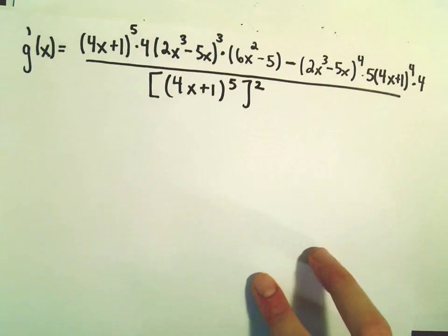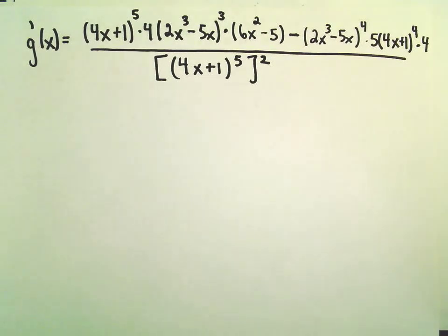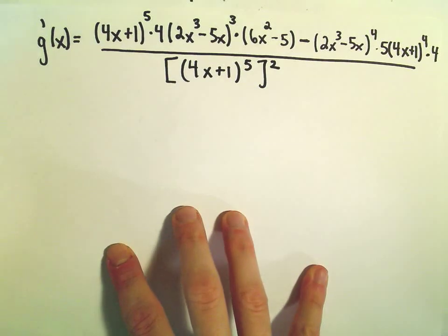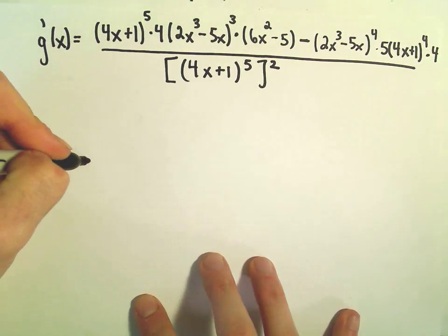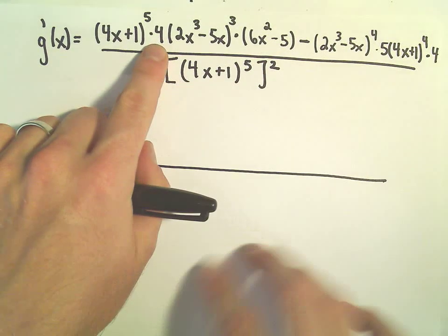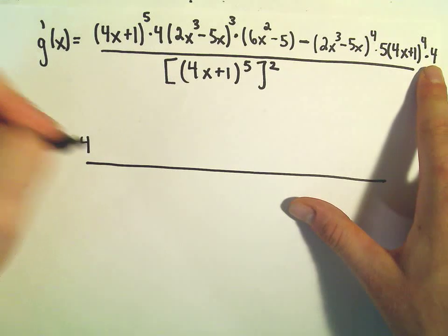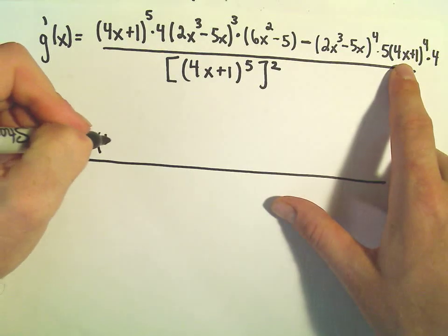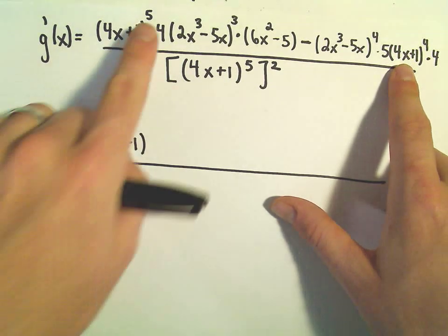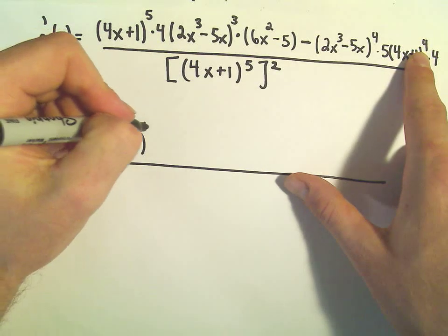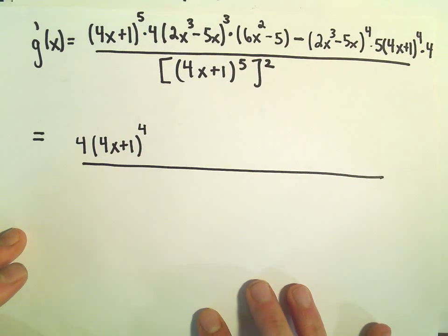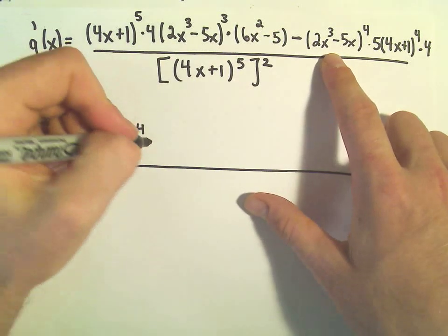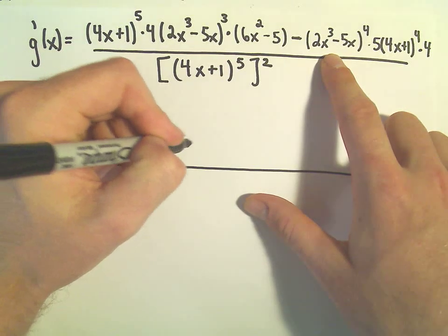So let's see if we can't try to condense this down a little bit better. Let's try to factor some stuff and clean this up. I see that there's a 4 and a 4, so I'm going to factor the 4 out of there. I see a 4x plus 1 and a 4x plus 1, so I can factor out a 4x plus 1. I can pull out the smaller exponent, which is to the 4th power. We also have a 2x cubed minus 5x and a 2x cubed minus 5x, so I'm going to factor that out as well.